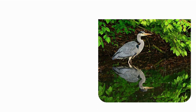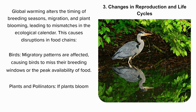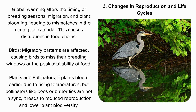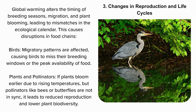3. Changes in reproduction and life cycles. Global warming alters the timing of breeding seasons, migration, and plant blooming, leading to mismatches in the ecological calendar and disruptions in food chains. Birds: migratory patterns are affected, causing birds to miss their breeding windows or the peak availability of food. Plants and pollinators: if plants bloom earlier due to rising temperatures but pollinators like bees or butterflies are not in sync, it leads to reduced reproduction and lower plant biodiversity.